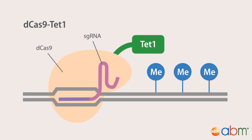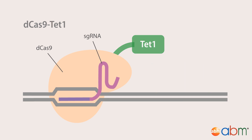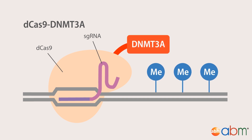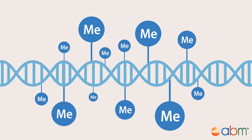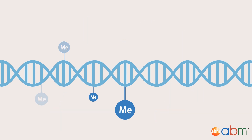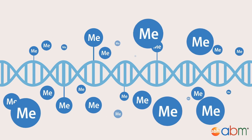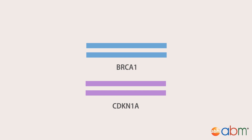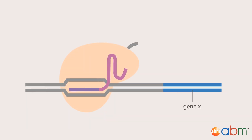The two best-known dCas9 fusions currently available for manipulating DNA methylation status are dCas9-TET1, which demethylates DNA, and dCas9-DNMT3A, which methylates CpG sites in vivo. These tools have already been used to investigate the effect of demethylation and hypermethylation of tumor suppressor genes such as BRCA1 and CDKN1A.